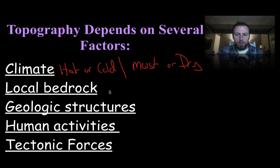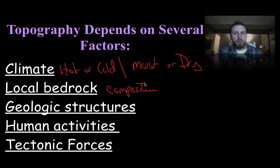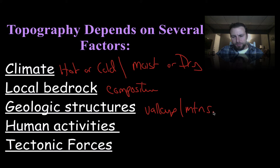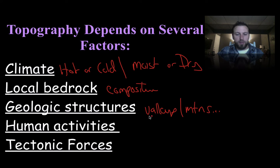For local bedrock, we're going to look at the composition, because the minerals that make up those rocks will determine how resistant they are to weathering. Geologic structures — any sort of valleys or mountains — will affect how rivers may flow, which will ultimately affect the topography.